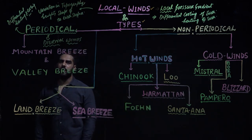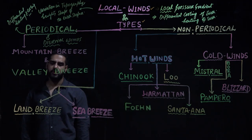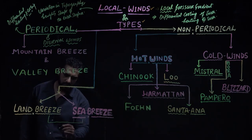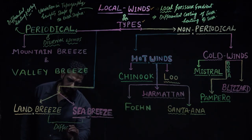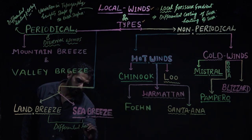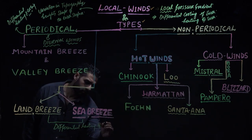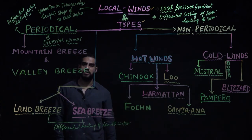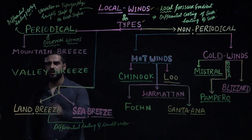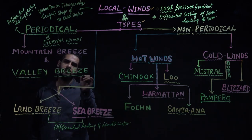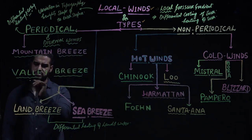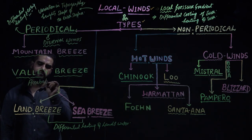Examples of periodical winds include mountain breeze and valley breeze, and land breeze and sea breeze. Land breeze and sea breeze are outcomes of the differential heating of land and water. During the day we have sea breeze; during the night we have land breeze. Similarly, during the day we have valley breeze and during the night we have mountain breeze. This valley breeze is also called anabatic winds.